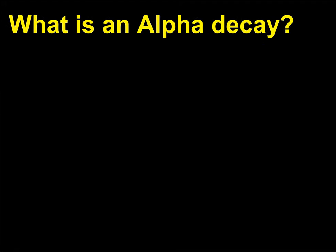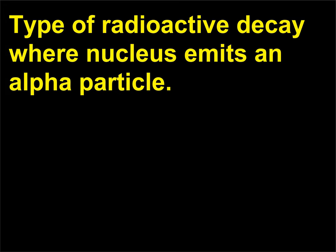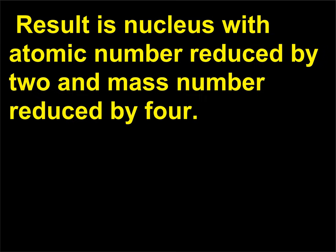What is an alpha decay? It is a type of radioactive decay where the nucleus emits an alpha particle. The result is a nucleus with an atomic number reduced by 2 and a mass number reduced by 4.